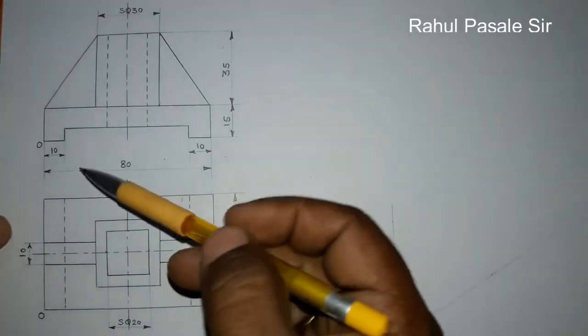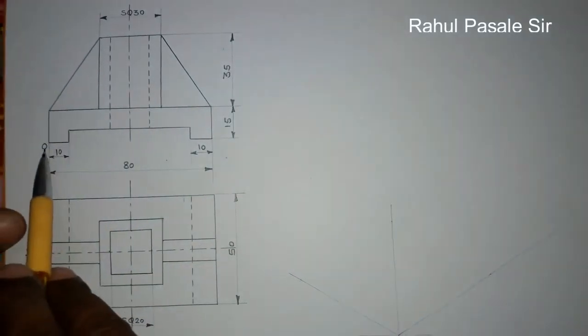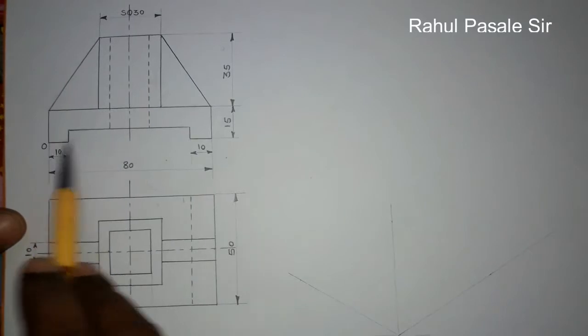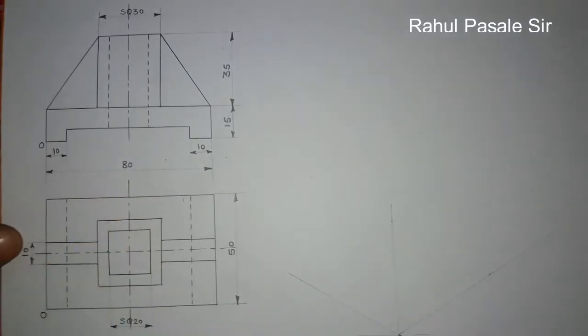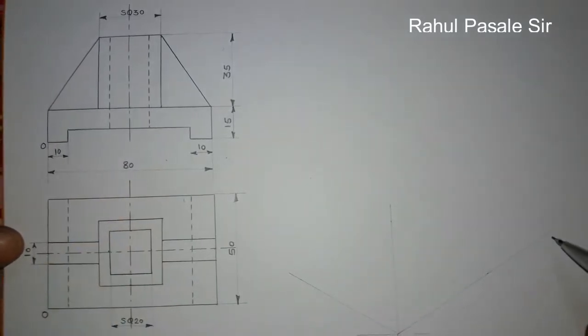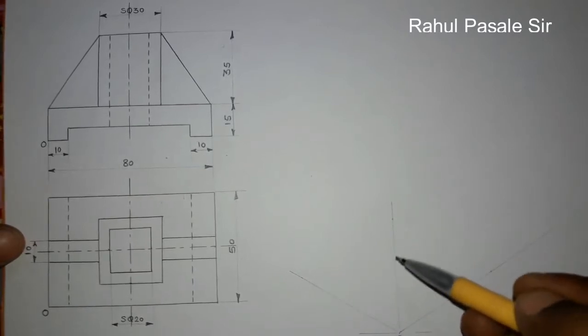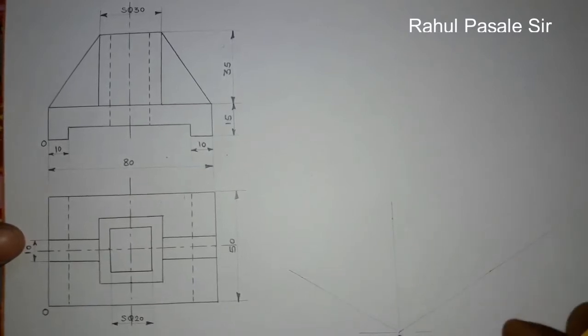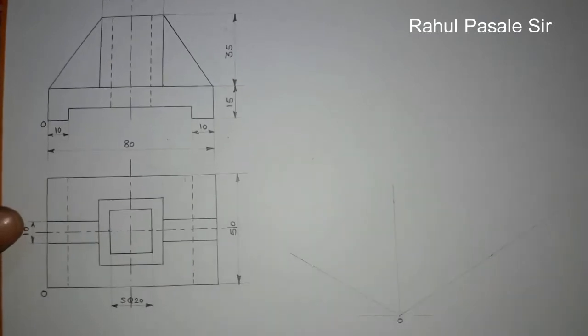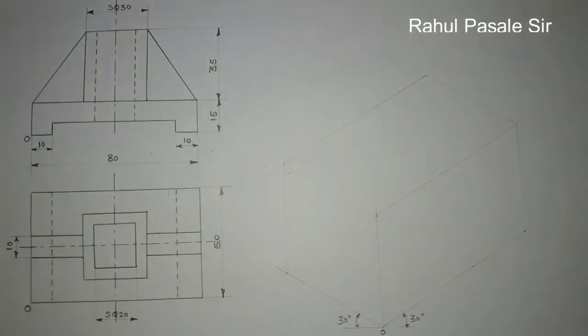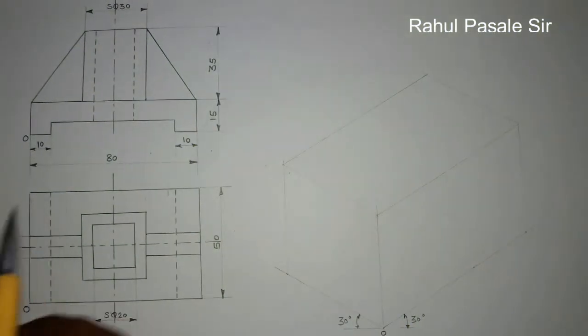First, we prepare a block of 80 by 50 by 50mm size. As you see, the length is taken towards the right side of O, so we are going to mark the length 80mm on the right side of O, then width on this axis and height on this axis. Like this, we prepare the first block for this component.